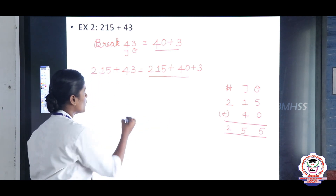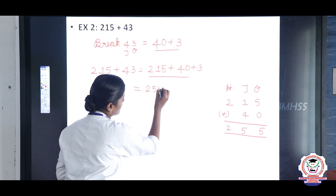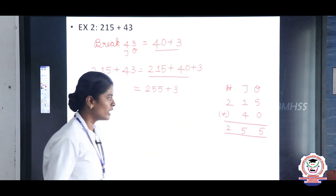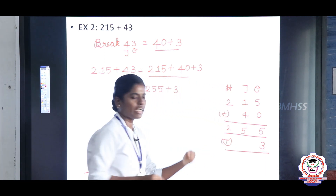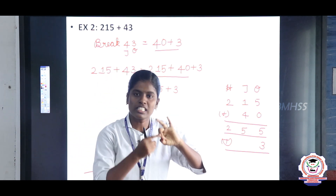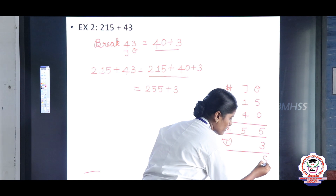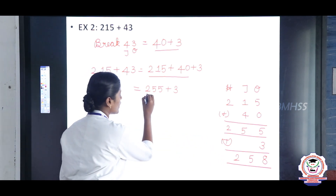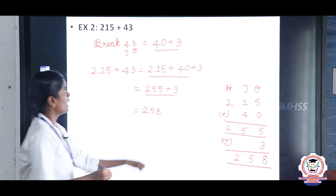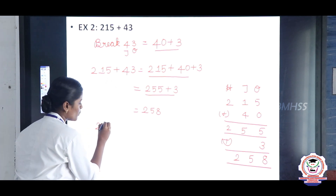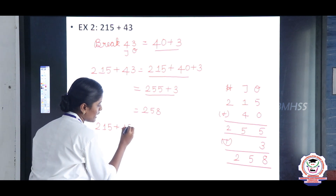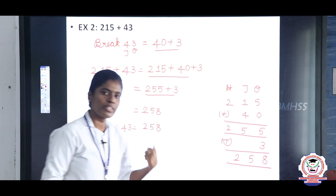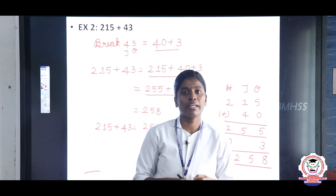Now write 255 plus 3. Write 3 in the ones place. Add: 5 in the mind, 3 in the finger — 6, 7, 8 — the answer is 8. The tens place is 5 and the hundreds place is 2. So the final answer is 258. The question 215 plus 43 equals 258. Topic: find the sum by breaking one number — take the right side first group of the number and use the expanded form.